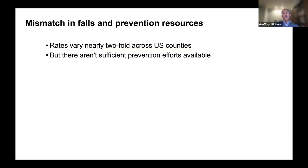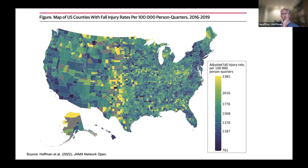There's a lot of geographic variation in fall injury risks — about a two-fold variation where some counties have twice as many fall injuries as others. One way to understand this is a mismatch between the prevalence of fall risk in a community and the resources allocated for preventing falls. This mismatch is illustrated by two figures showing fall injury distribution across the U.S. and the availability of prevention programs.